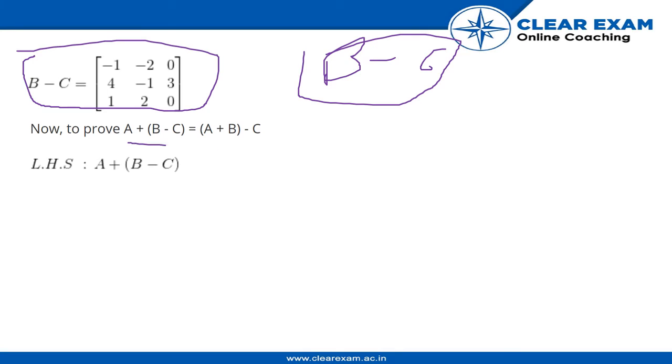That is, we have to prove A plus bracket of B minus C is equal to A plus B minus C. This thing looks similar. I think this looks like associative property. It is just modified a little bit and the associative property holds over addition and subtraction in algebra. Let us verify that. Does it hold for matrices as well?